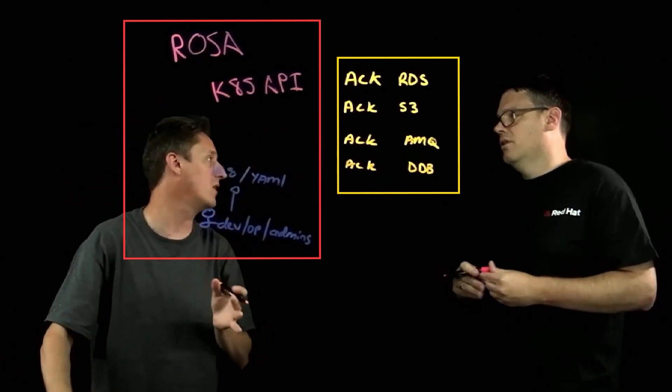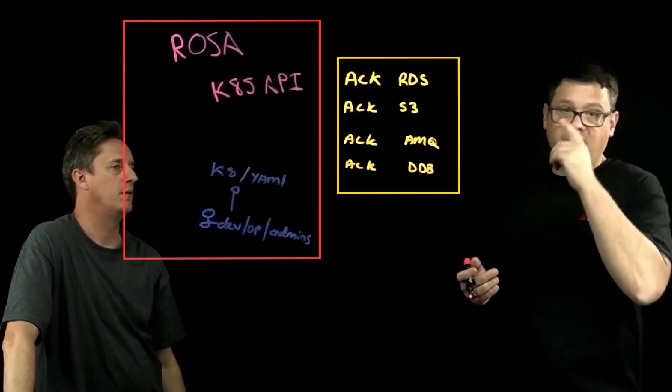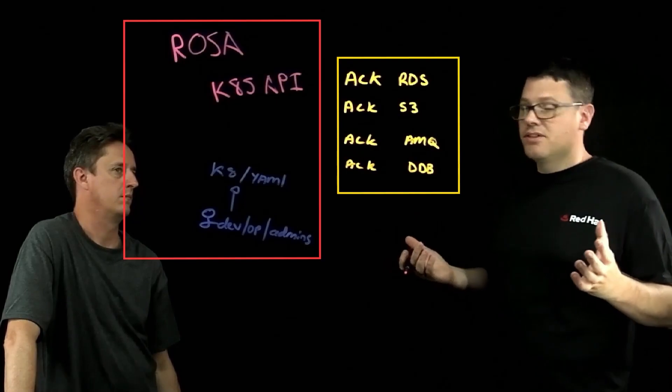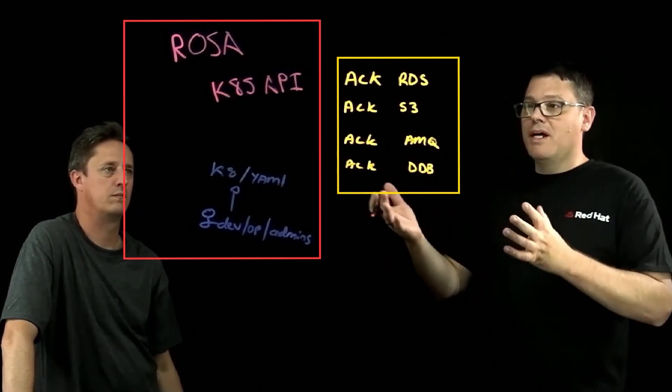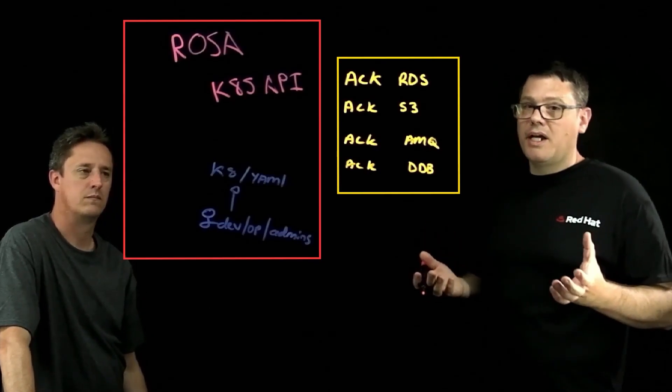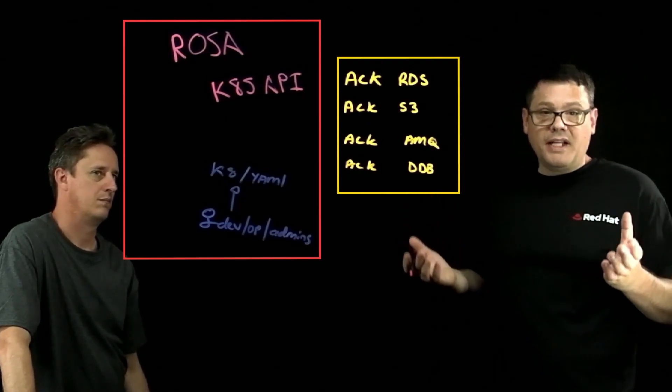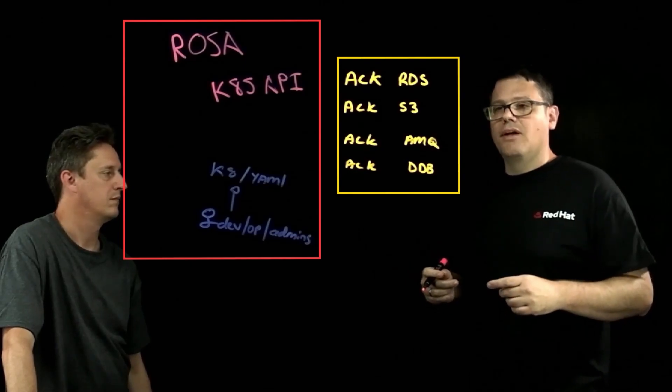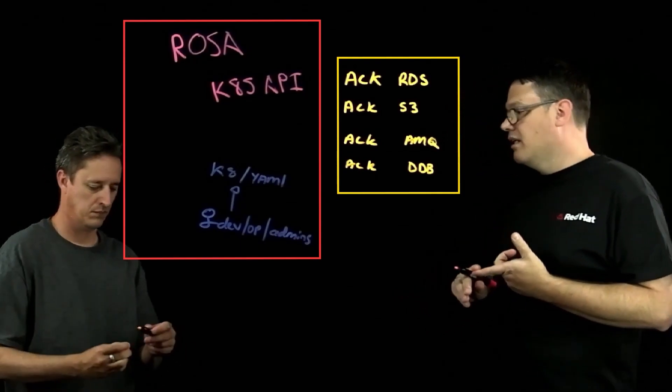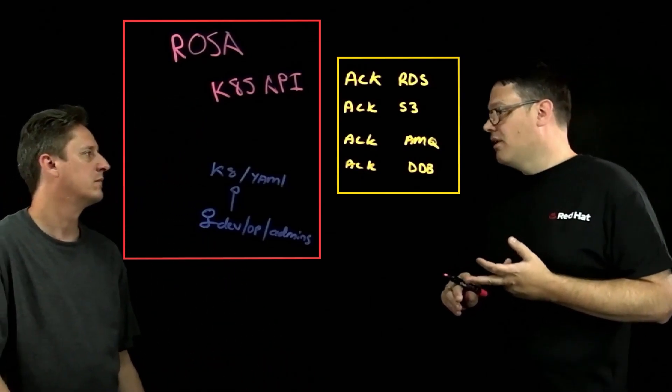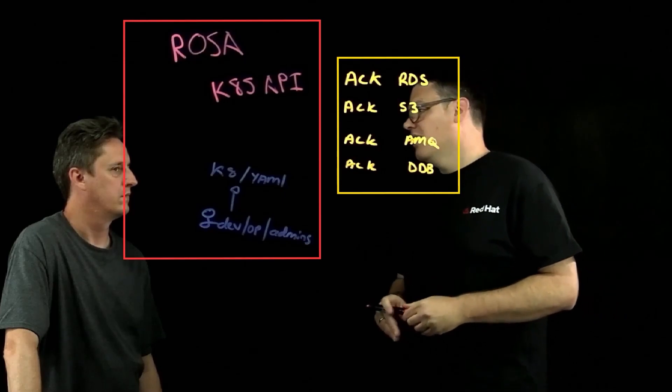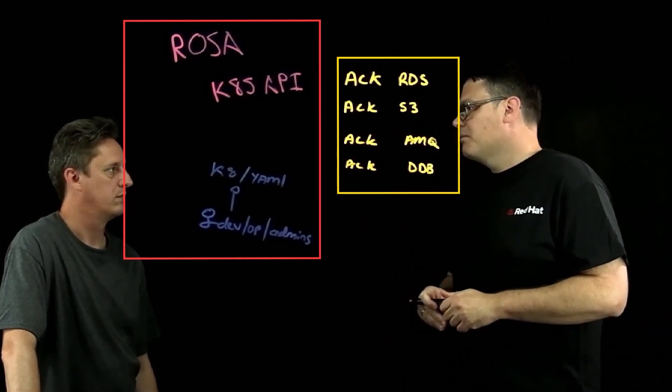Once the operator is installed, you can continuously invoke it or interact with it to provision as well as bind that service back to your application running here in OpenShift. As an example, with RDS, you would post a chunk of YAML that defined a DB instance object to the Kubernetes API. The API would validate that request and hand it to the controller that's running. It's the controller's job to translate that into calls to the AWS API. Assuming that succeeds and the correct permissions are there, the controller will then inject a secret back into the requesting namespace that contains the connection string—hostname, endpoint, and credentials to talk to that RDS instance.